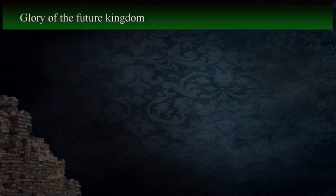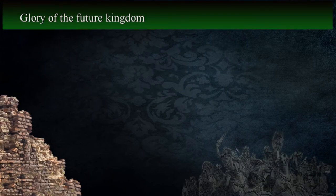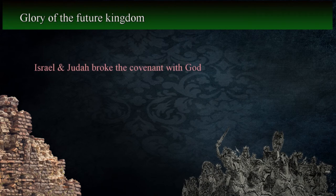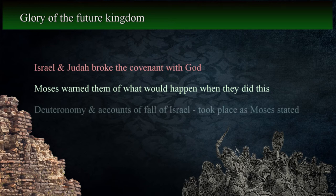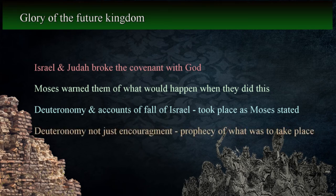The children of Israel, both in the northern and southern kingdoms, broke the covenant the Lord made with them. Moses warned the people and described what was to happen to them when this took place. These descriptions are plainly stated in Deuteronomy and can be compared to accounts of the last days of both kingdoms to show that they took place exactly as Moses said they would. The book of Deuteronomy is not only an encouragement to remember the Lord and follow his laws, but it's also a book of prophecy that detailed God's judgment against his people.